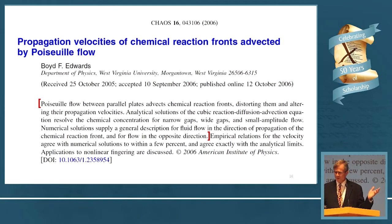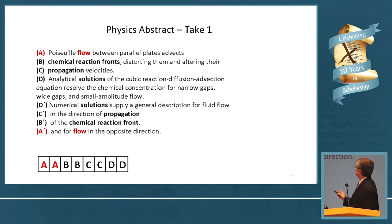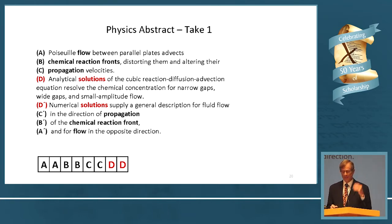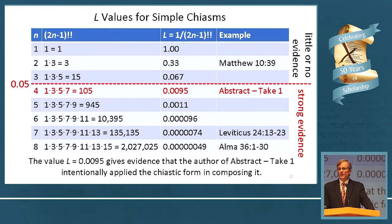Physics abstract. I'm a physicist; I write physics papers. This is one example I wrote in 2006. A couple of weeks ago in preparation for this talk, I looked at my abstract with new eyes, and between those two red square brackets I found a four-element chiasm: flow/flow, chemical reaction fronts, propagation/propagation, solution/solutions. Pretty darn good, right? And so the statistics said that should be an intentional chiasm. This value of L gives evidence that the author — who is me — of this abstract intentionally applied the chiastic form.